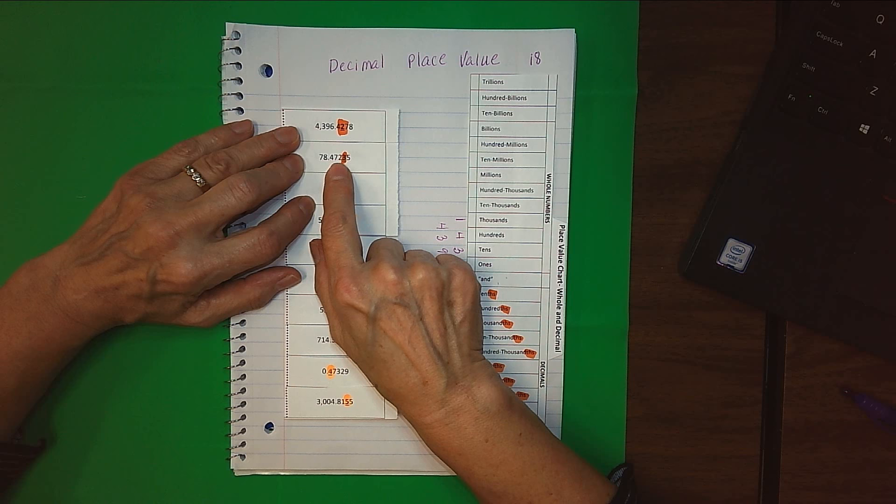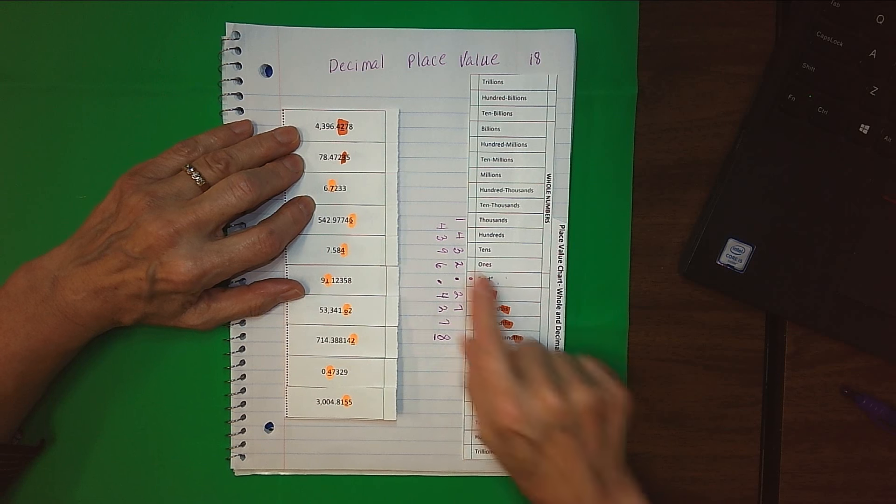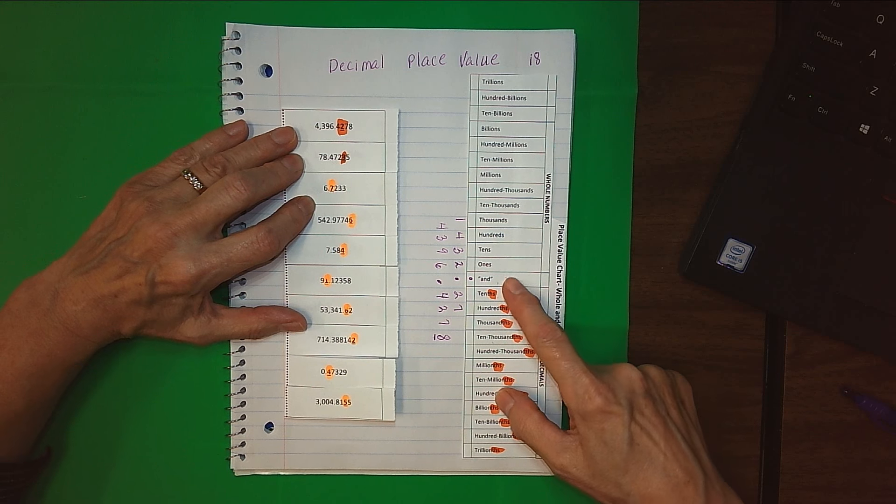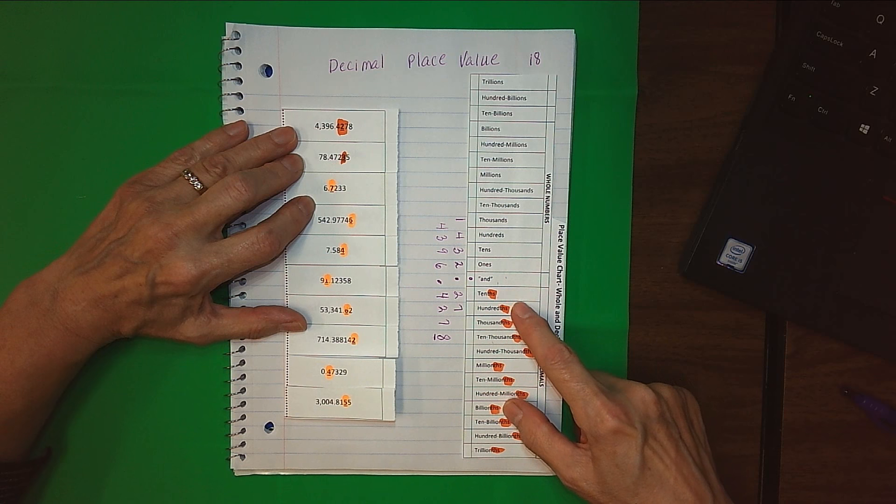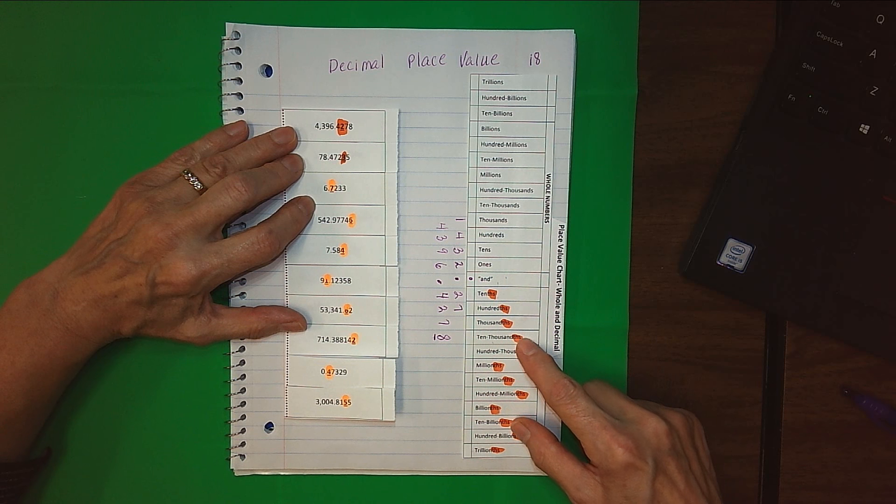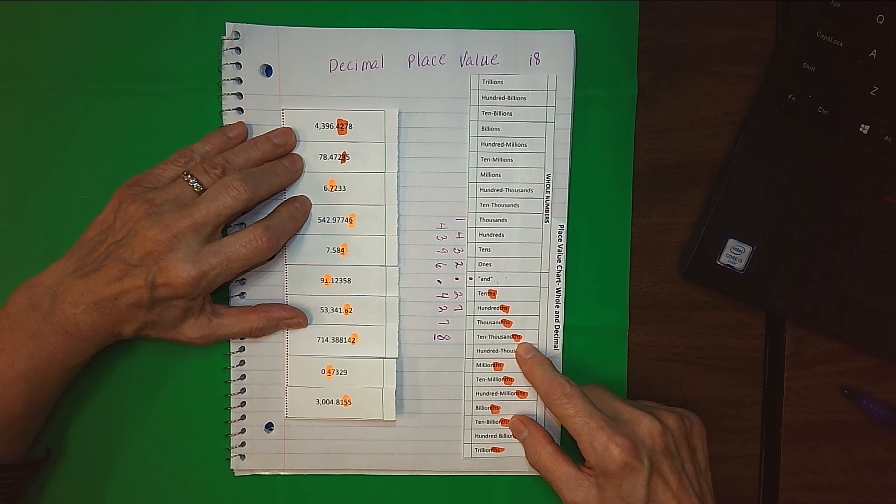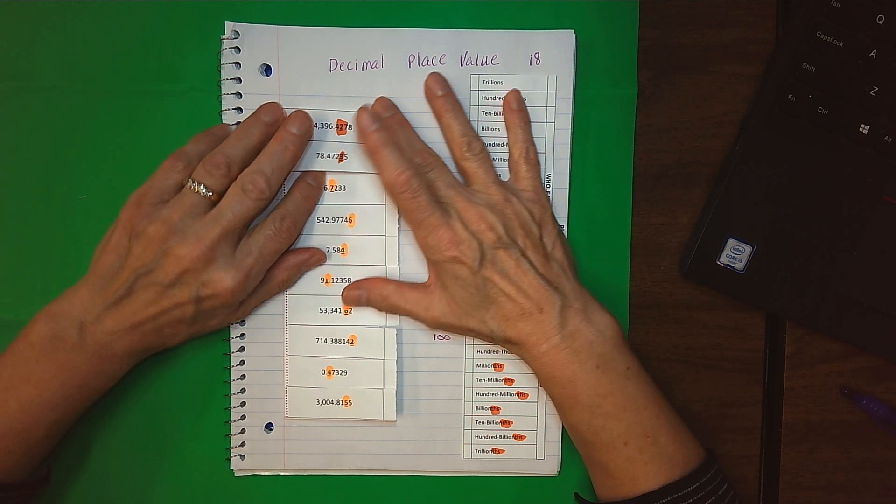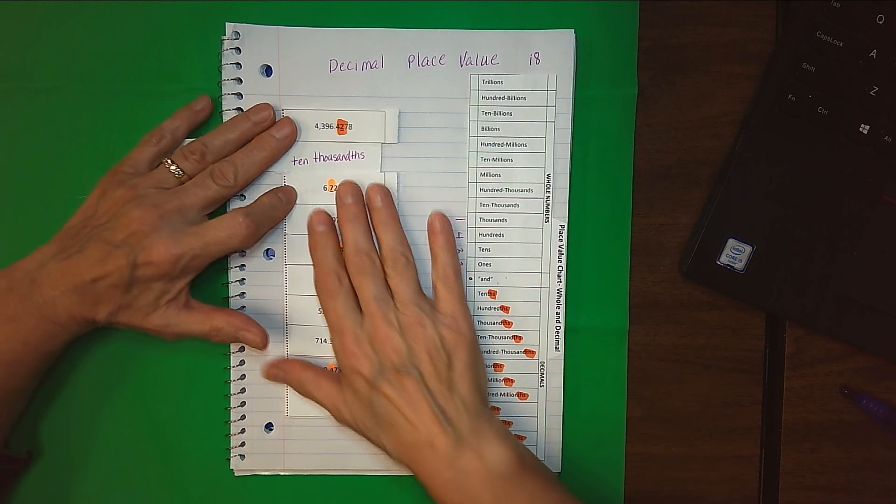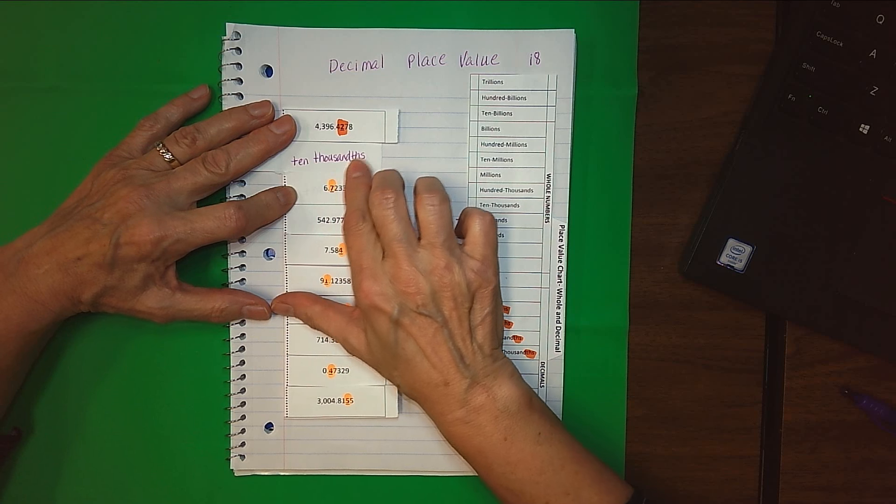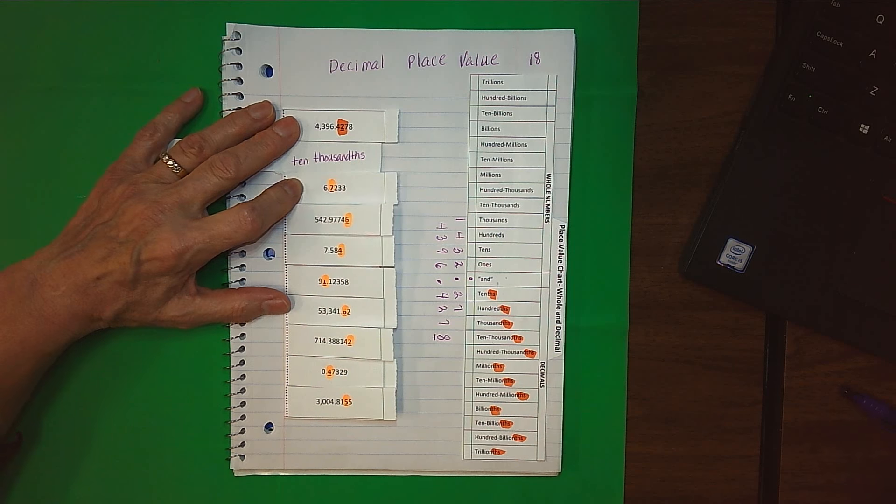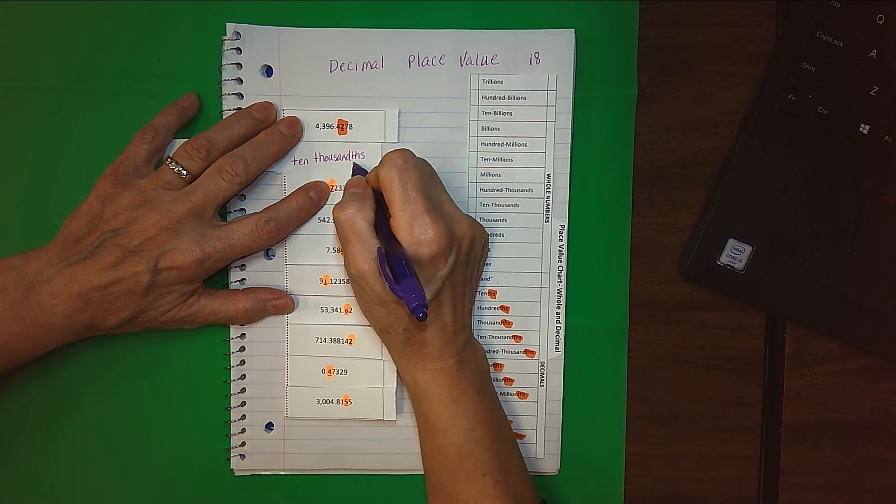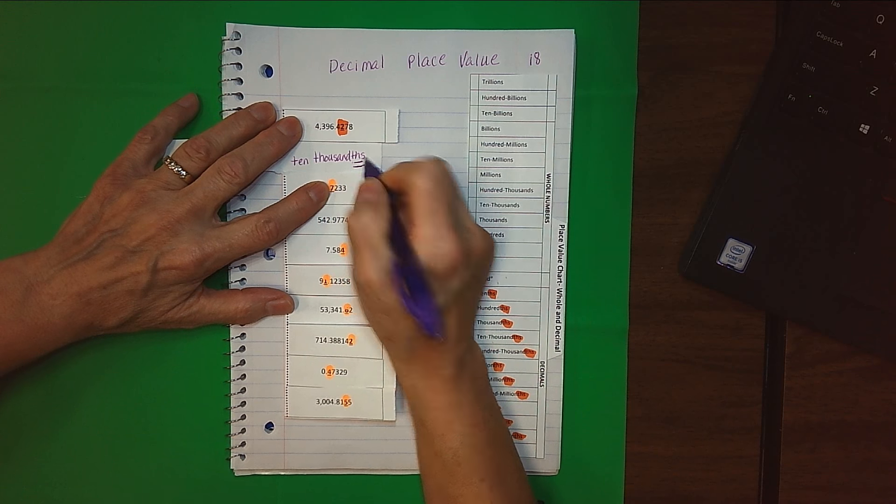We're one, two, three, four places away from the decimal point. So over here, one, two, three, four places away from the decimal point. Sure enough, that three is in the ten thousandths place. I'll write in the word ten thousandths. Again, remembering to put my little th at the end so that I know I'm talking about a decimal place value.